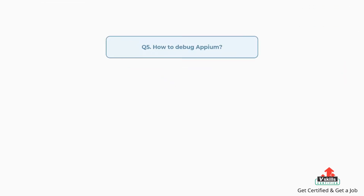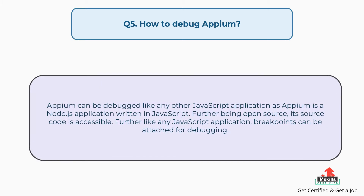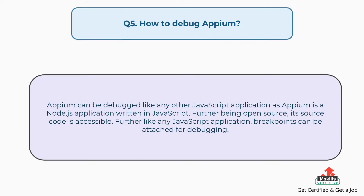Question number 5: How to debug Appium? Appium can be debugged like any other JavaScript application, as Appium is a Node.js application written in JavaScript. Further, being open source, its source code is accessible. Like any JavaScript application, breakpoints can be attached for debugging.